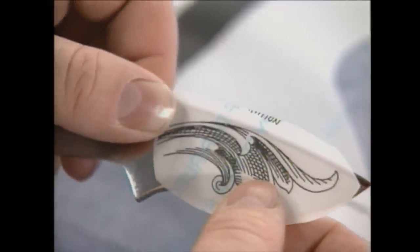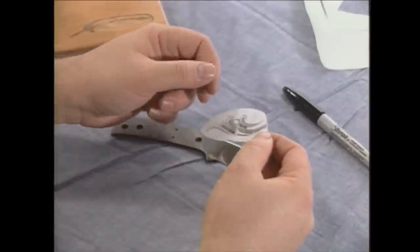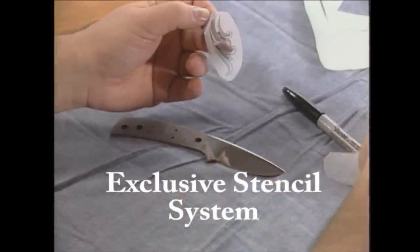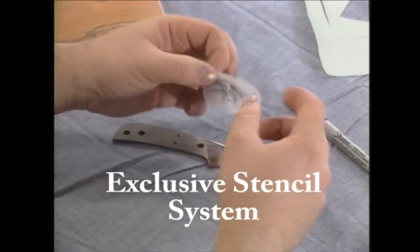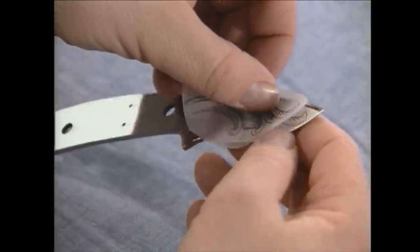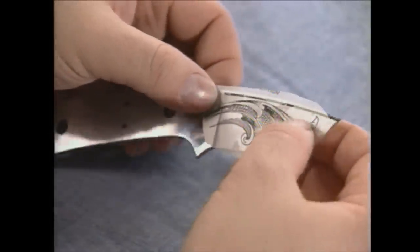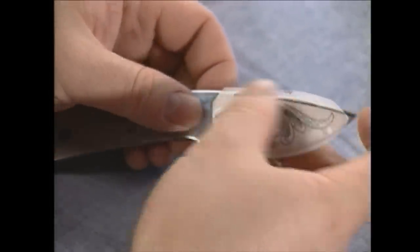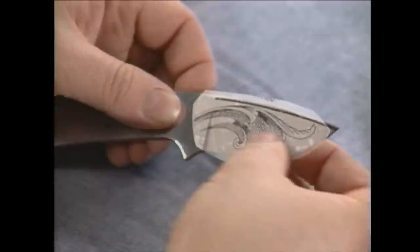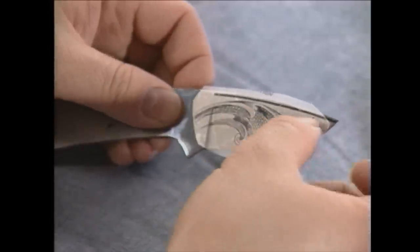We use a stencil method, same as on the gunstock. Just use a Xerox machine to apply your design to the transfer material, cut it out, fit it to the blade that you'll be working with. You can reposition it all that you want, it doesn't have to be a mirror polished blade. It'll stick without a problem, won't leave any residue. Just press it down and you can start cutting.